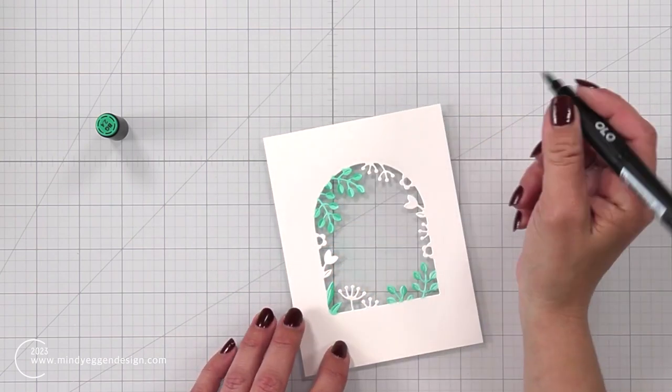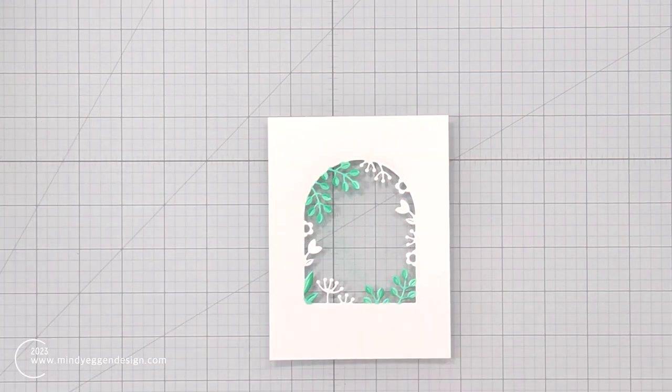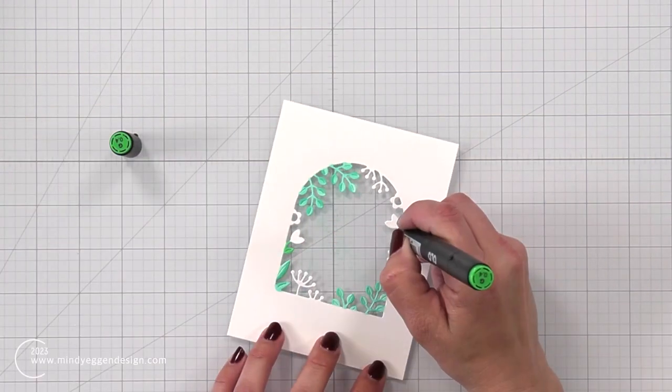And then I went around with a 2.4, BG 2.4, and just added a line on each leaf to give it a look of a shadow.